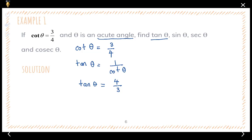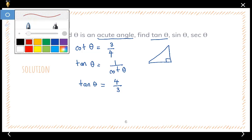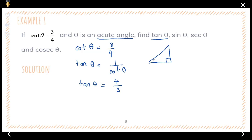Next we need to find sine theta, secant theta, and cosecant theta. We can get these from a right angle triangle. Draw your right angle triangle and transfer the given information. Let theta be the angle. Since tangent theta is four over three, and tangent is opposite over adjacent, we label opposite as four and adjacent as three. From this we know the hypotenuse is five, using Pythagoras' theorem.